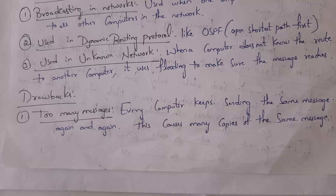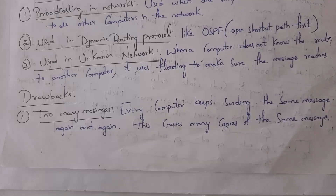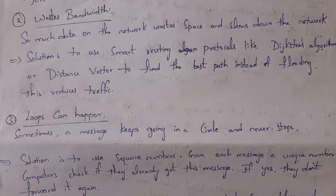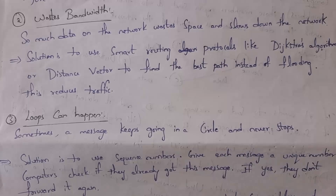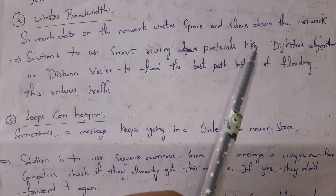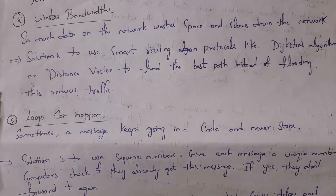These are the disadvantages of threading. The first disadvantage is too many messages — each router keeps sending data again and again to their neighbors, which causes many copies of the data. The second disadvantage is bandwidth wastage: as messages keep repeating, they consume a lot of bandwidth, which slows down the network. To overcome this, we can use protocols like Dijkstra's algorithm or the distance vector algorithm to find the shortest route.